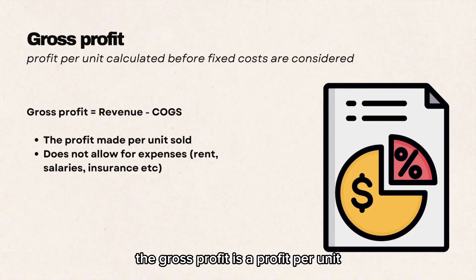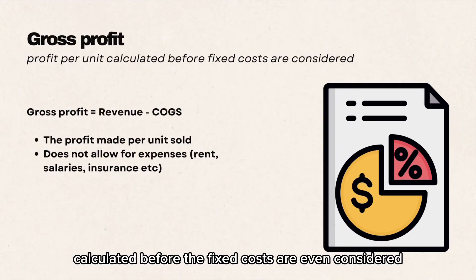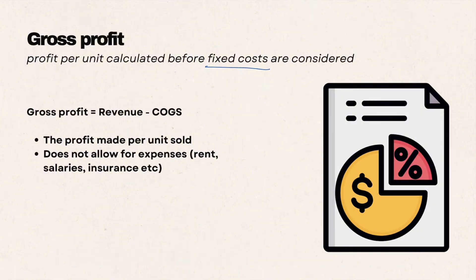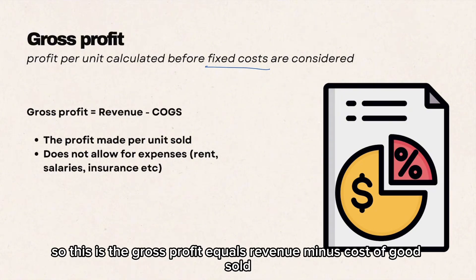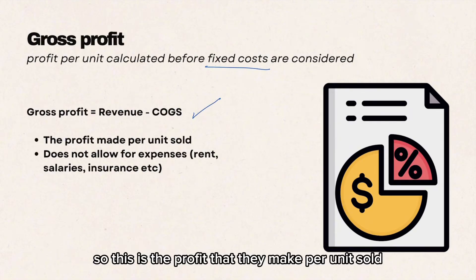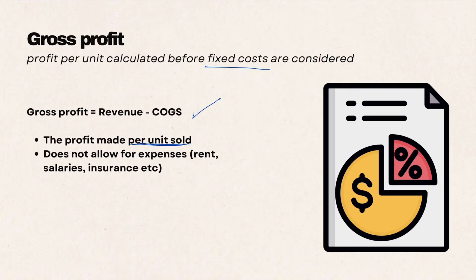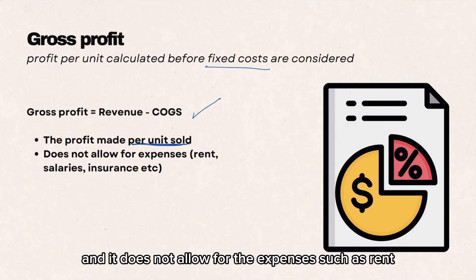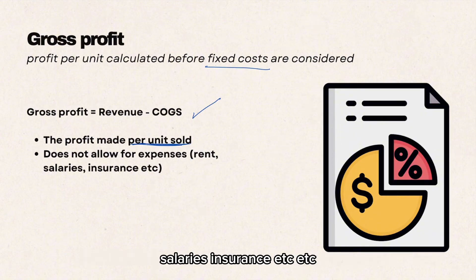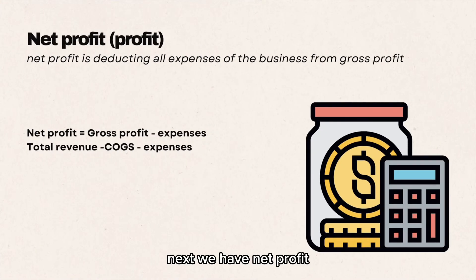The next feature is gross profit. Gross profit is the profit per unit calculated before fixed costs are considered. The formula is: gross profit equals revenue minus cost of goods sold. This is the profit made per unit sold and does not account for expenses such as rent, salaries, or insurance.